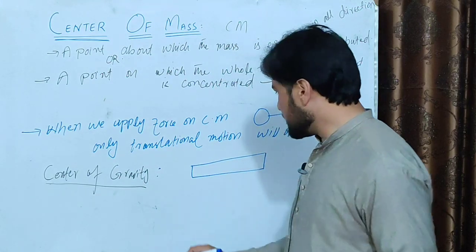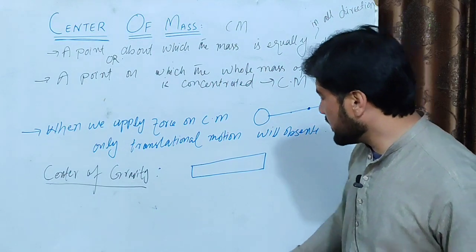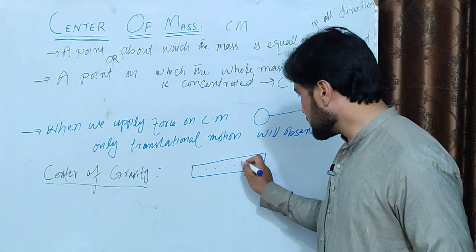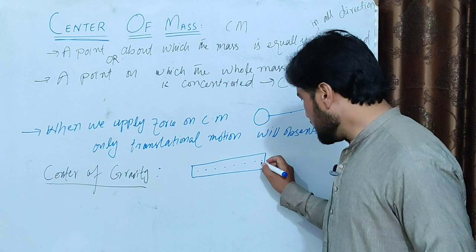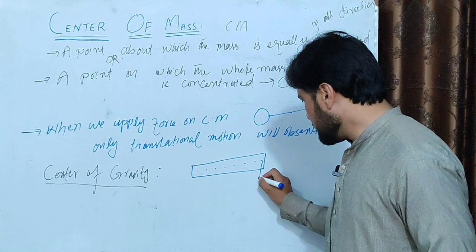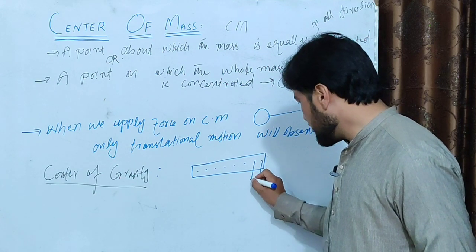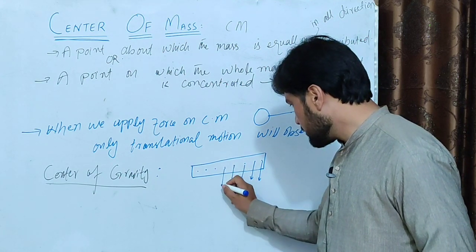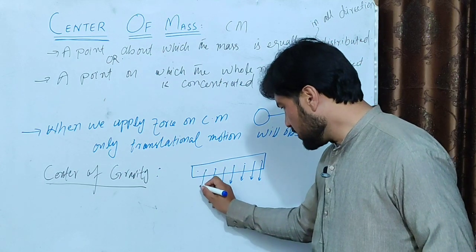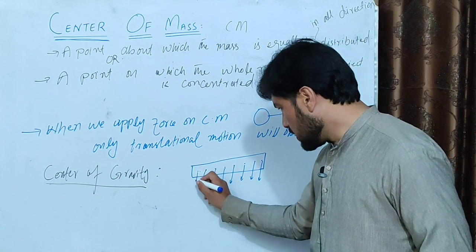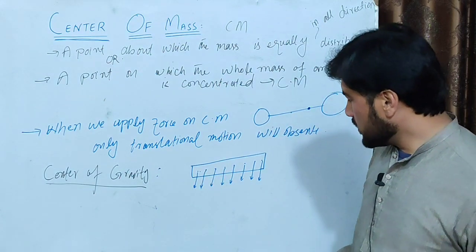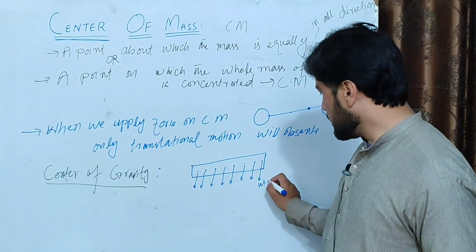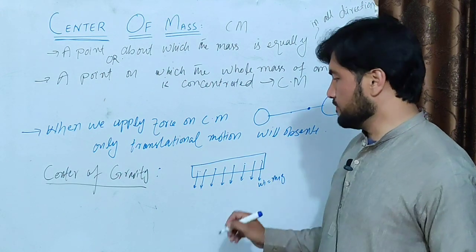For example, an extended body is made of atoms. The atoms experience a downward force — the force of gravity acting downward on each atom. This downward force is W1, equal to M1 times G.